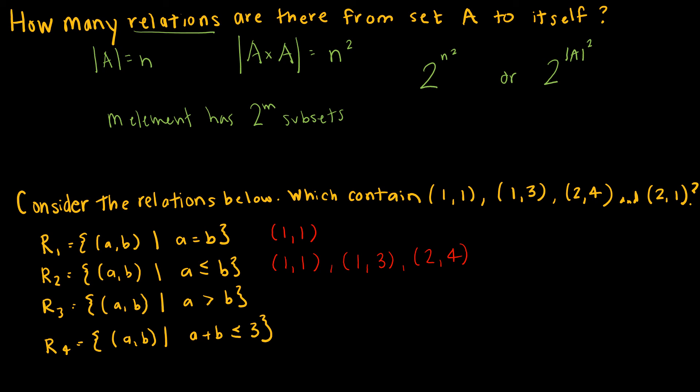For R3, R3 contains all of the ordered pairs AB such that A is greater than B. And that would be not 1, 1, and not 1, 3, and not 2, 4, but it would include 2, 1, that lonely little guy we left out last time.